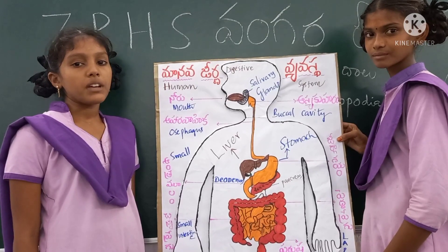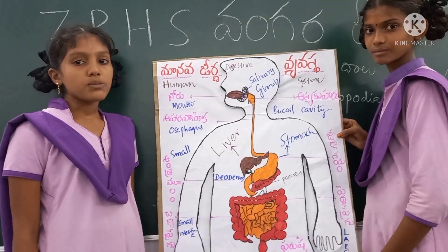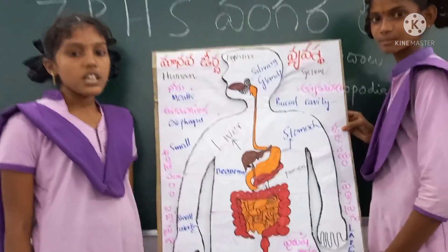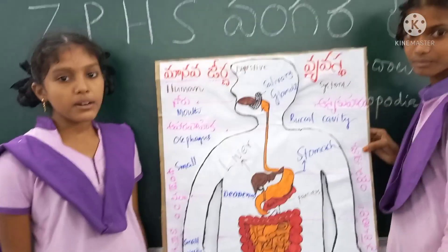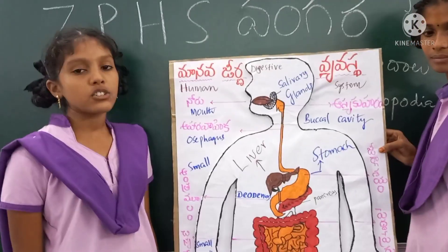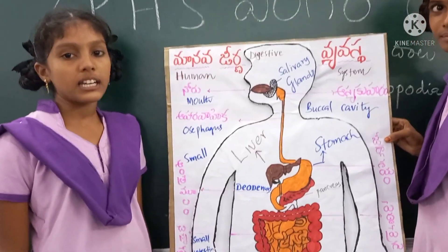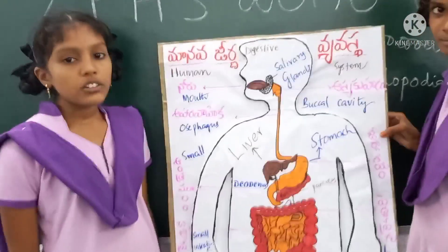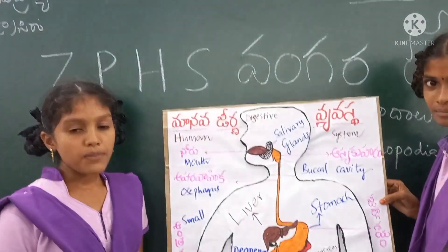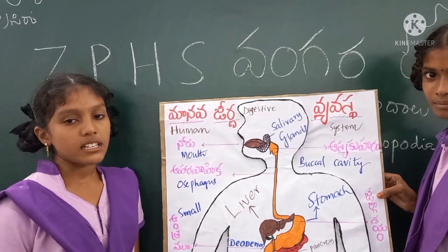Duodenum is the first part of the small intestine. Bile juice from the liver and pancreatic juice from the pancreas enter into it and help in digestion.